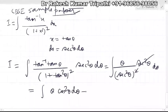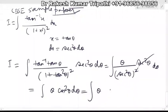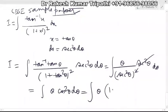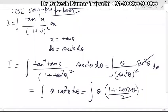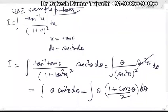Now θ cos² θ should be written using the identity: cos² θ equals (1 + cos 2θ)/2. So 1/2 can be taken common.